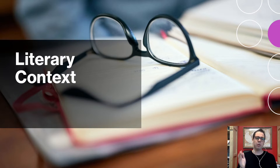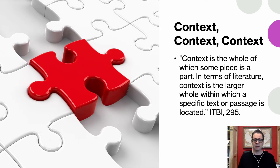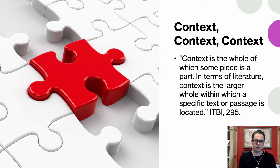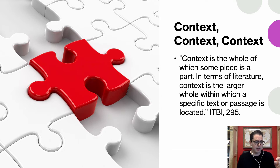You can actually make a person say exactly the opposite of what they were saying if you just take a snippet of their overall speech out of context. Literary context is absolutely crucial in understanding the biblical text. Context is the whole of which some piece is a part. In terms of literature, context is the larger whole within which a specific text or passage is located. Think of a puzzle piece — the only way to truly understand how that piece fits into the larger picture is to put it in its proper place.